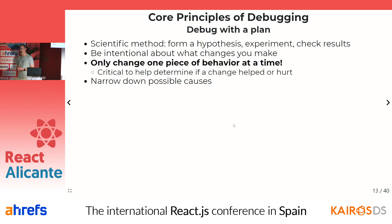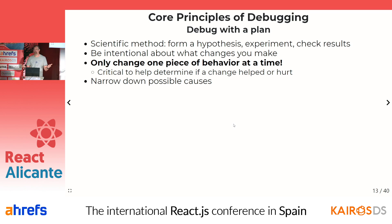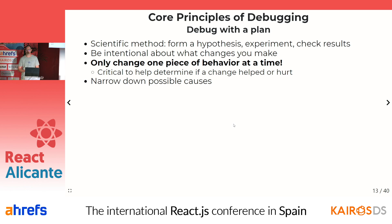It's also important to debug with a plan. Debugging is really about the scientific method — you make a hypothesis, you investigate it, you confirm or deny what's actually happening. You need to be very intentional about making changes to the code. I've seen many cases where developers just start changing code at random hoping it will fix things — that really only makes things worse. It's important to know here's why I'm going to make this tweak, and only try to change one thing at a time so you can verify if this change fixed it, rather than making 10 changes and not knowing which one actually did something. This allows you to narrow down the possible causes.